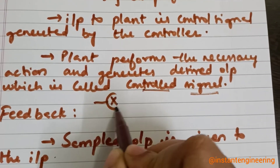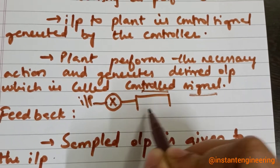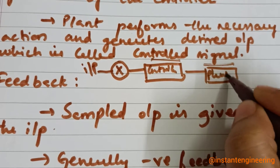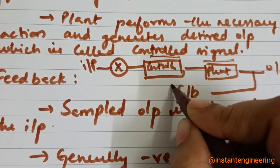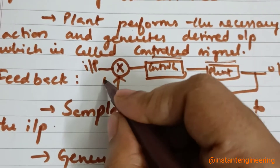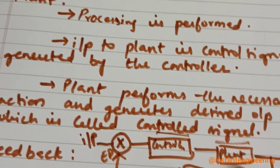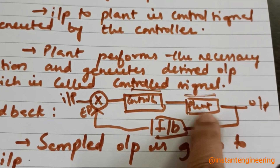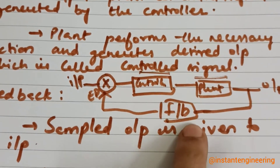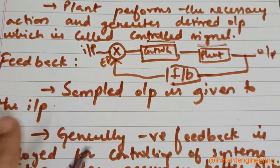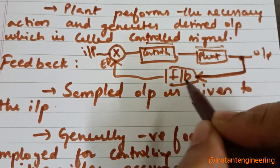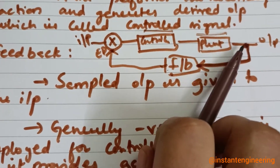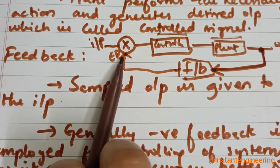Let me draw this roughly: we have an error detector, then a controller, then a plant, and the output. From the output, feedback is given back to the error detector. The plant gets a signal from the controller, processes it, and gives the output — called the control signal. The feedback takes that output signal and gives it to the error detector to check whether the output obtained is correct or not.